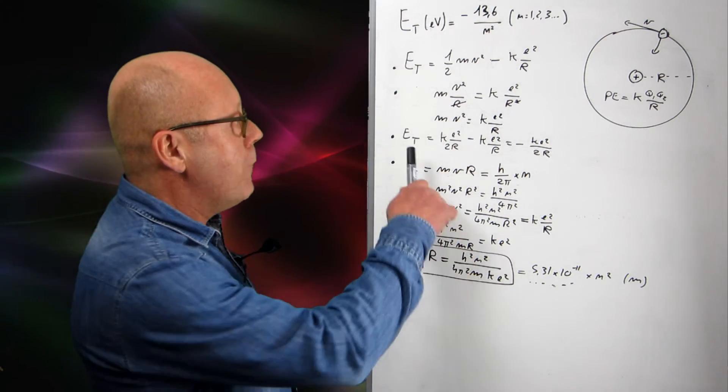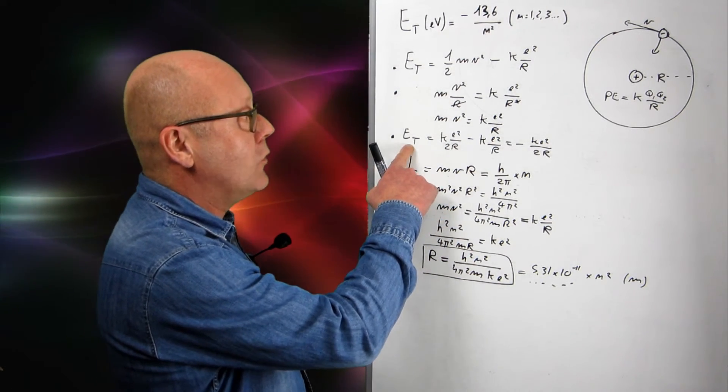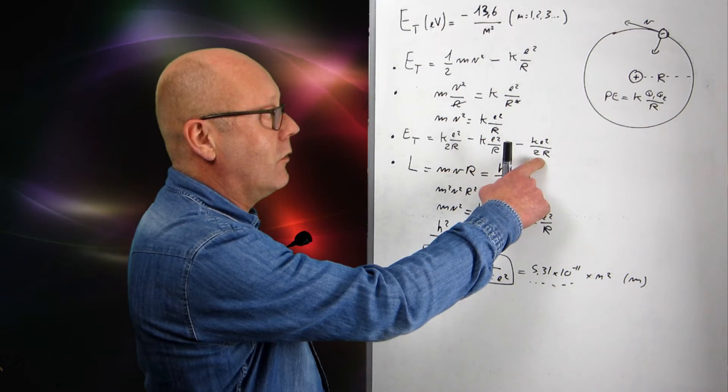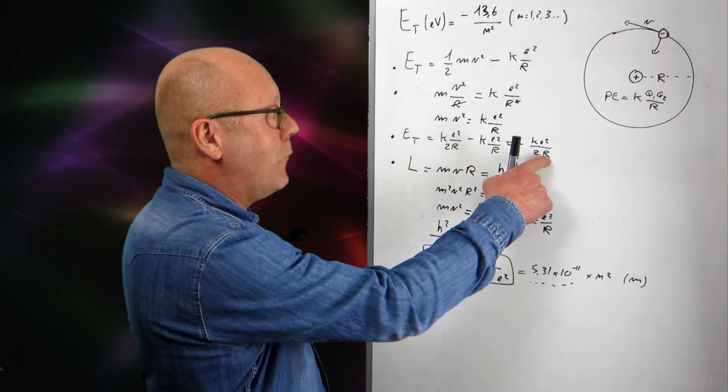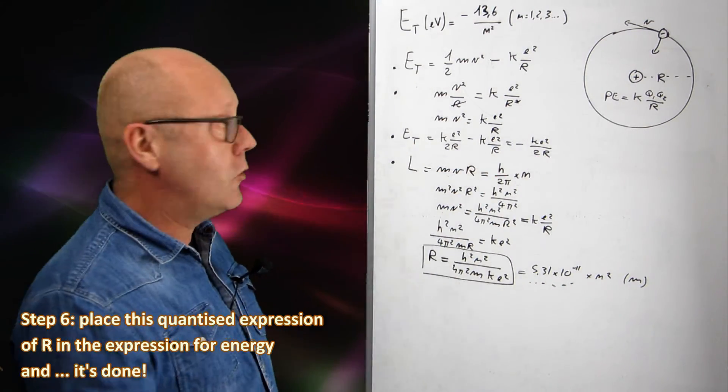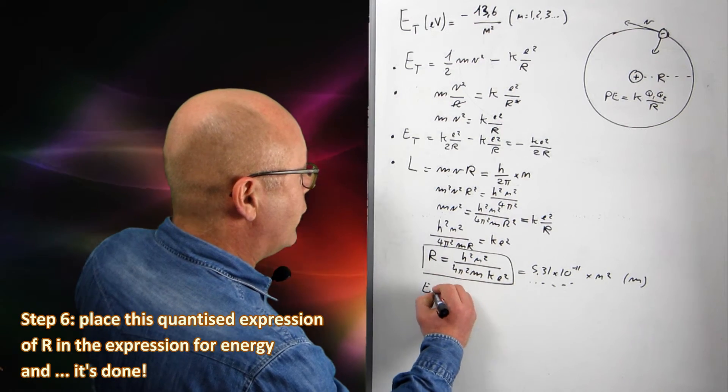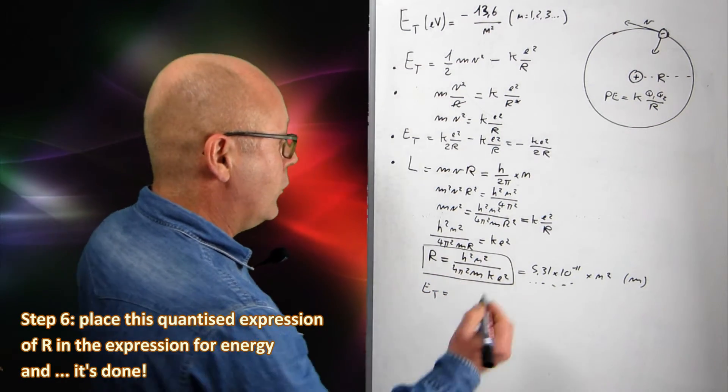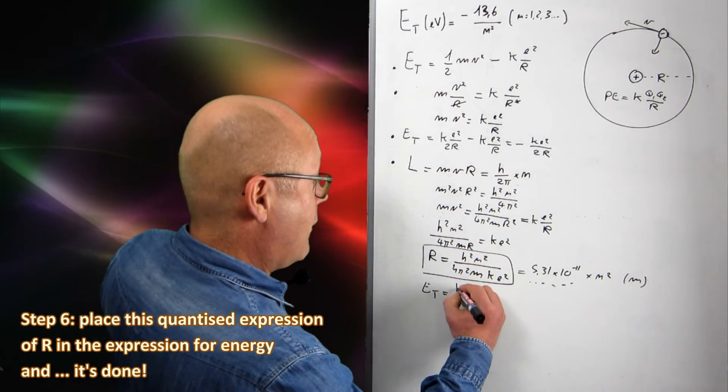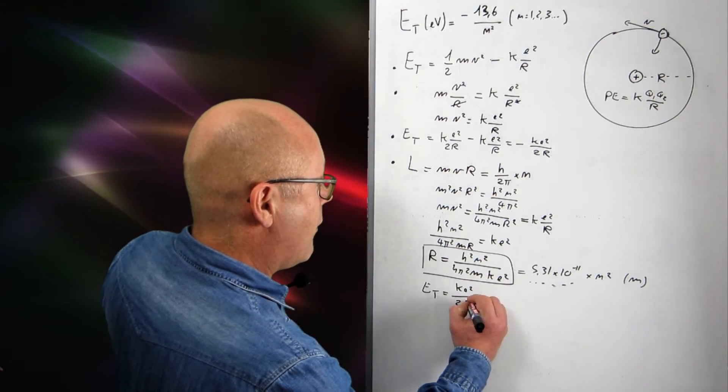Well, actually, we're nearly done. Because we have an expression for the total energy, which depends on the radius. So I can just put this number in there. And that's what I'm going to do. The total energy will be equal to, I'm just going to plug in the things, ke-squared, divided by 2r.